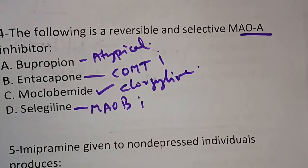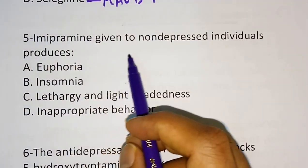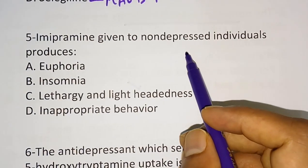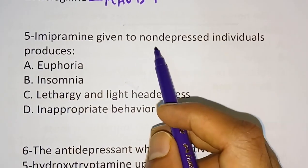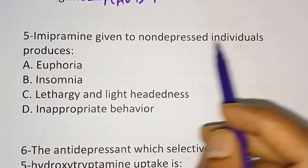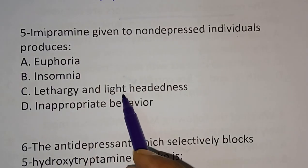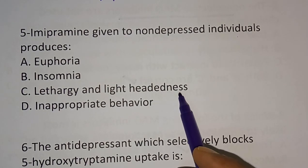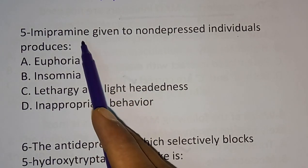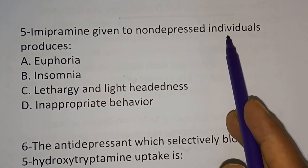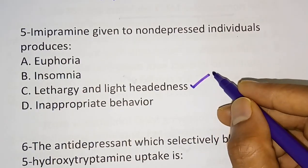Question number five: Imipramine given to a non-depressed individual produces what effect? Options are euphoria, insomnia, lethargy and lightheadedness, or inappropriate behavior. The correct answer is lethargy and lightheadedness.